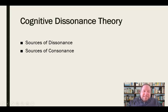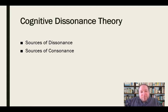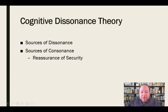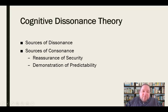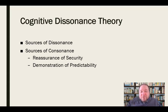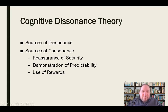Then we also have sources of consonance — the opposite of dissonance. Sources of consonance reduce that tension for people, and that's what we're working toward as persuaders. Things like a reassurance of security: helping people understand that they are secure and feel secure. Providing a demonstration of predictability — we're getting closer to this with weather forecasting, where we can predict and alert people to major weather events better than ever before. And finally, the use of rewards: people like rewards, and we can use those to create some consonance and reduce that psychological tension.